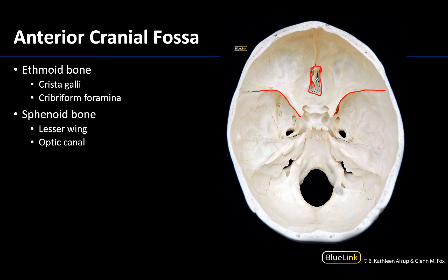The crista galli is going to be the anterior attachment for the falx cerebri, which is one of your dural partitions — in fact, it's your largest dural partition. Very distinctive next to it, on either side of the crista galli, are all these small holes or foramina. Specifically, we refer to these as the cribriform foramina. This is how those olfactory nerve axons — cranial nerve one — are heading back towards the brain region. It's very sieve-like with all these small foramina on either side of the crista galli.